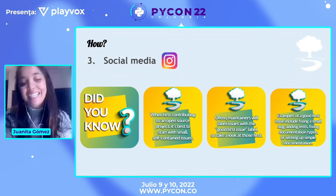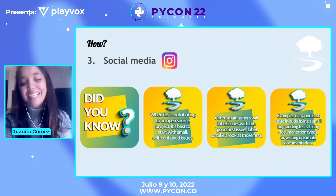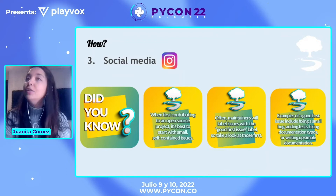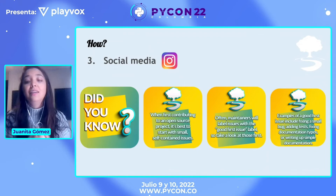This is another post I made that's also useful in order to show people how they can start helping. It talks about how, when you start contributing to a project, you can look for the 'good first issue' tag in the issue tracker. Sometimes that's going to be a good example of what you can do if you're not very familiar with the project or the code.